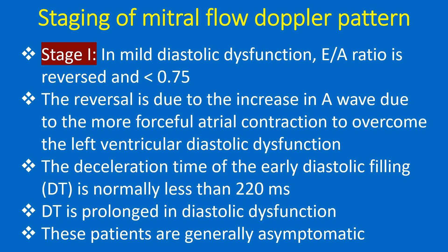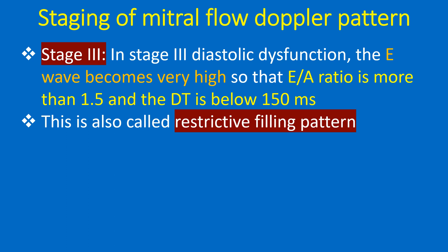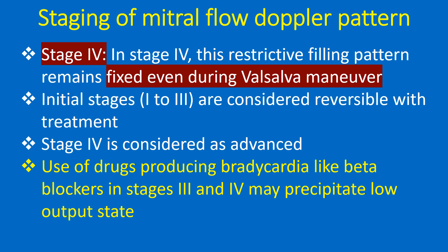In Stage 2 diastolic dysfunction, the E-wave becomes taller due to elevated left atrial pressure — this is called pseudo-normalization of the filling pattern. E-by-A reversal can still be demonstrated during Valsalva maneuver in this stage. In Stage 3, the E-wave becomes very high so that the E-by-A ratio is more than 1.5 and the DT is below 150 ms; this is also called the restrictive filling pattern. In Stage 4, this restrictive filling pattern remains fixed even during Valsalva maneuver.